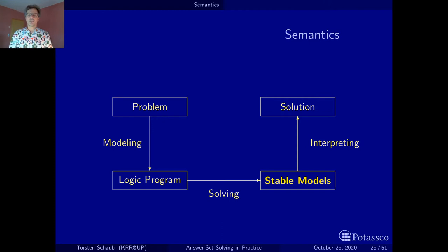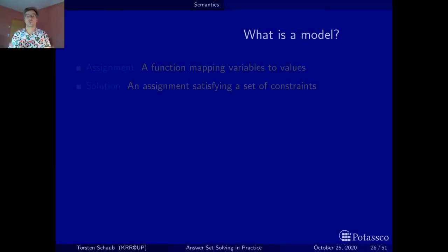So stable models already sound heavy. What is stable, what is even a model? Let's start with this and first look at the question, what is actually a model? The ultimate purpose of a model is to capture solutions. To this end, a model is composed of variables that you are actually using in the problem description. The very basic thing is the notion of an assignment here. An assignment is nothing else than a function mapping variables to values.